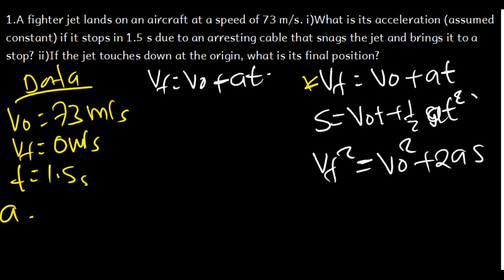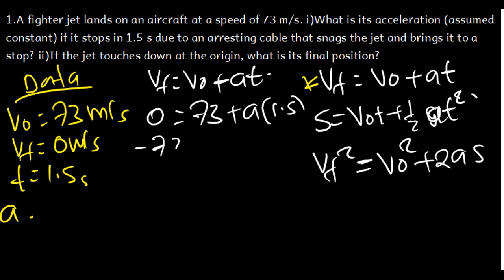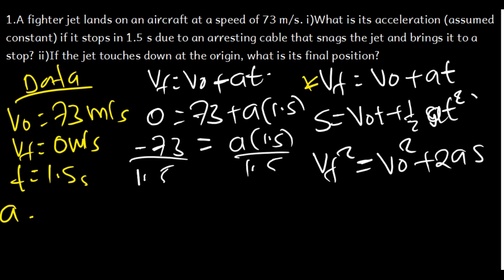V_final is zero, V_initial is 73, and the time is 1.5. We shift 73 to the other side: negative 73 = a × 1.5. Dividing both sides by 1.5, we get the acceleration. Using a calculator, negative 73 divided by 1.5 gives negative 48.666, which is approximately negative 48.7 meters per second squared.